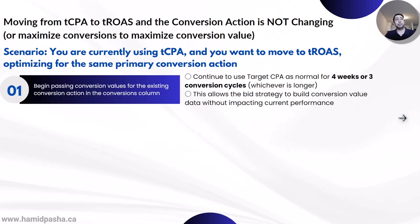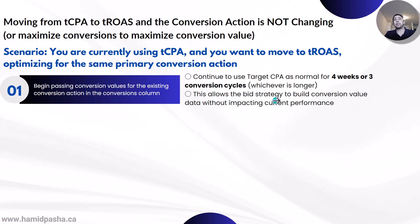For the first step, begin processing conversion values for the existing conversion action in the conversion column — just pass the conversion value data in your existing primary conversion action. Continue to use target CPA as normal for four weeks or three conversion cycles, whichever is longer. By conversion cycle, I mean the amount of time it takes for a click to turn into a conversion. Also, you need to consider the delay in uploading conversion data to your report if you are uploading data manually.